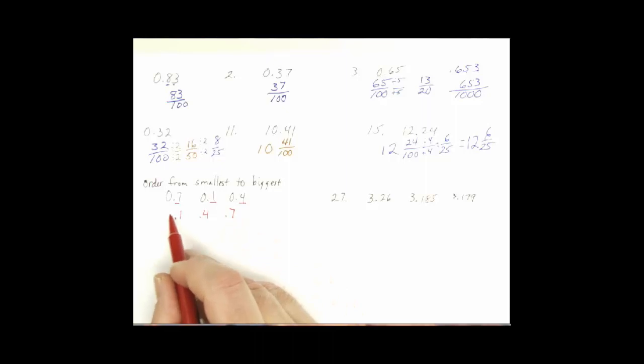Obviously, 0.1 is going to go before 0.4 that's going to go before 0.7. Again, you can put the zeros in front or not. Copper form usually has them, but they're not wrong if they're not there. And so that would be the answer.